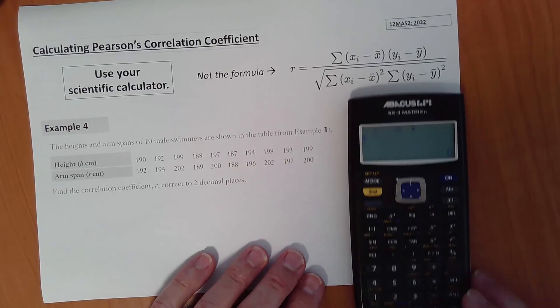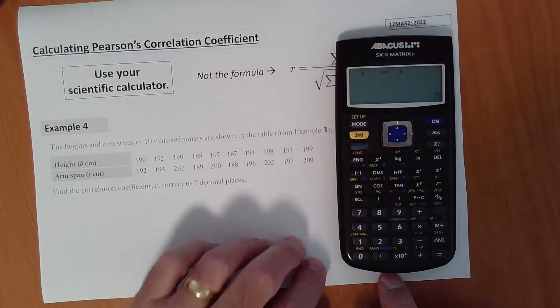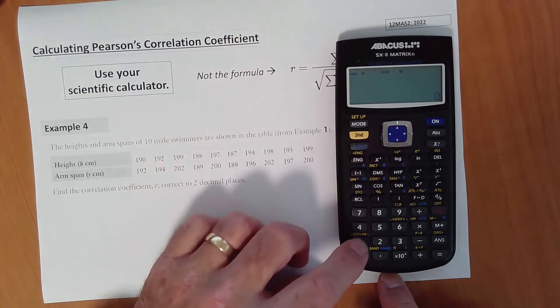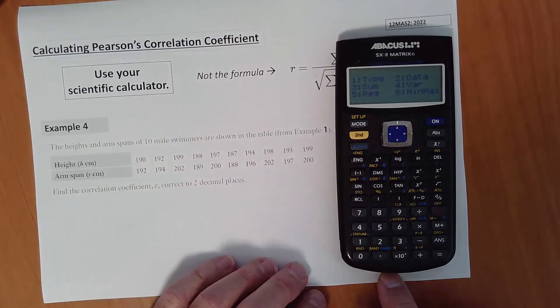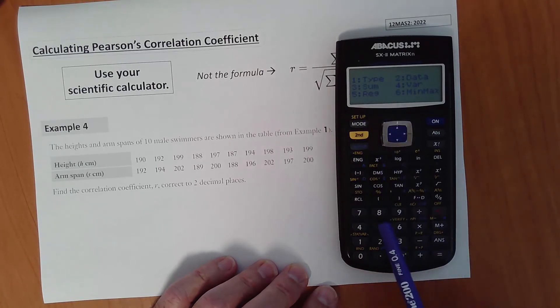Then we need to go into our stat var displays so we can calculate our correlation coefficients. Second function, stat on some calculators. Now what we need, because we're in regression mode, we're going to use number 5 reg for regression. Number 5.